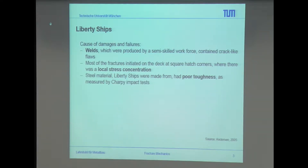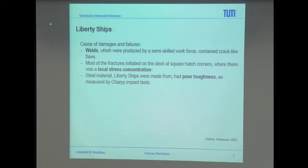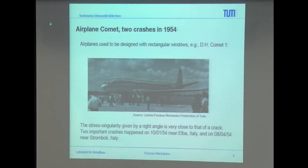Most of the fractures initiated on the deck at the square hedge corners where there was a local stress concentration. The steel material the Liberty ships were made from had poor toughness, and this was measured later by the Charpy impact test. The noun toughness is now something we will be talking about for the next 30 minutes — it is always the material property which gives the resistance to failing material.